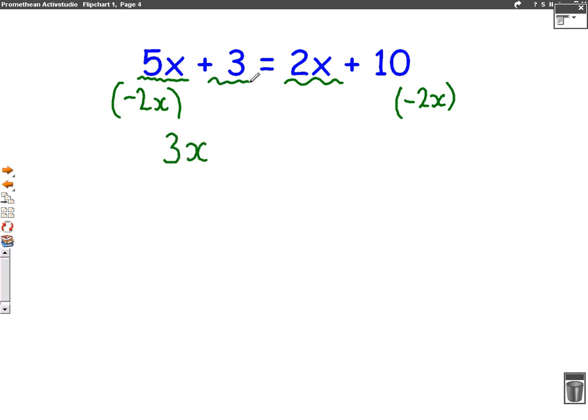We've still got this plus 3 here. So we write plus 3 equals, well on the other side, we only have 10 left because we've taken away the 2x. The 2x is gone. From here, it's quite easy, because we just follow the same steps as we did for the first example. Take away 3 on both sides. That leaves us with just 3x on the left. And 10 take away 3 is 7 on the right.